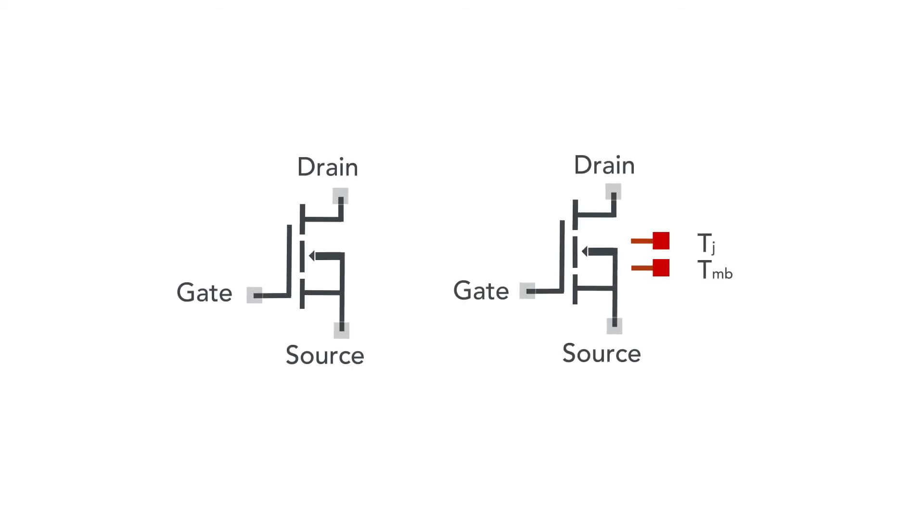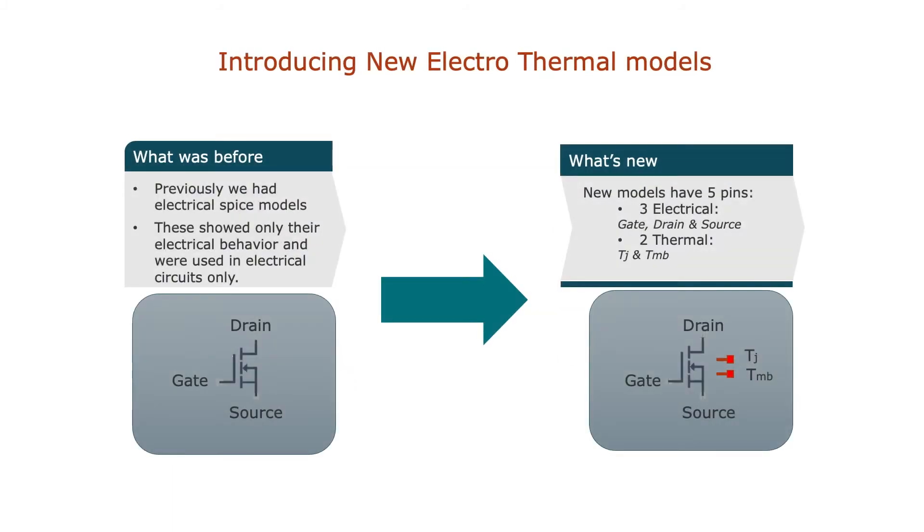Traditionally, the three-pin MOSFET had gate, drain, and source and was used to simulate electrical characteristics. The latest MOSFET model integrates the thermal behavior and is converted into a five-pin model consisting of gate, drain, source, junction, and ambient pins.